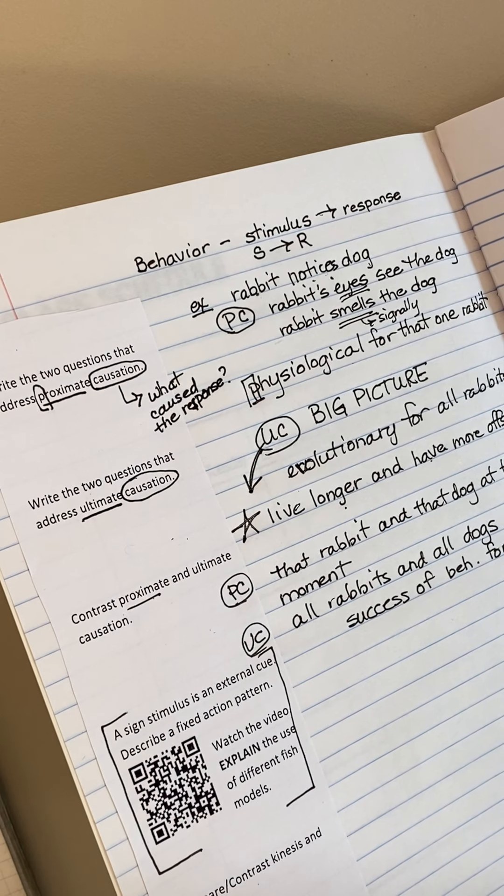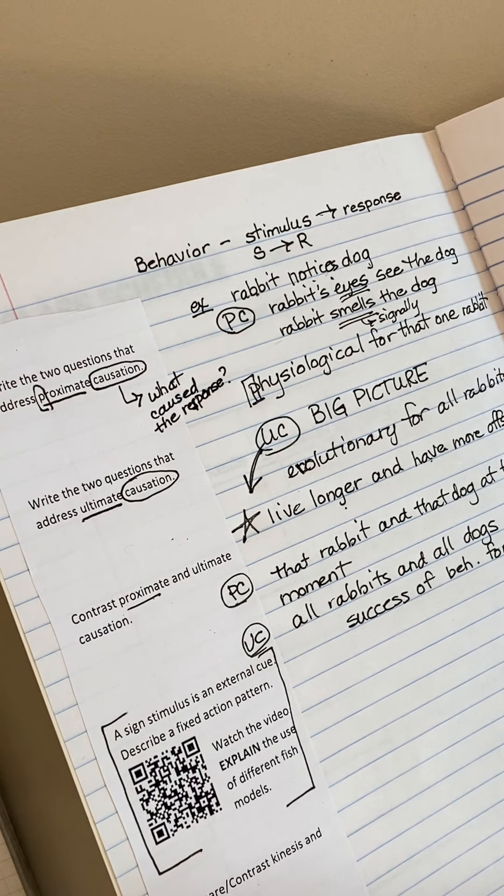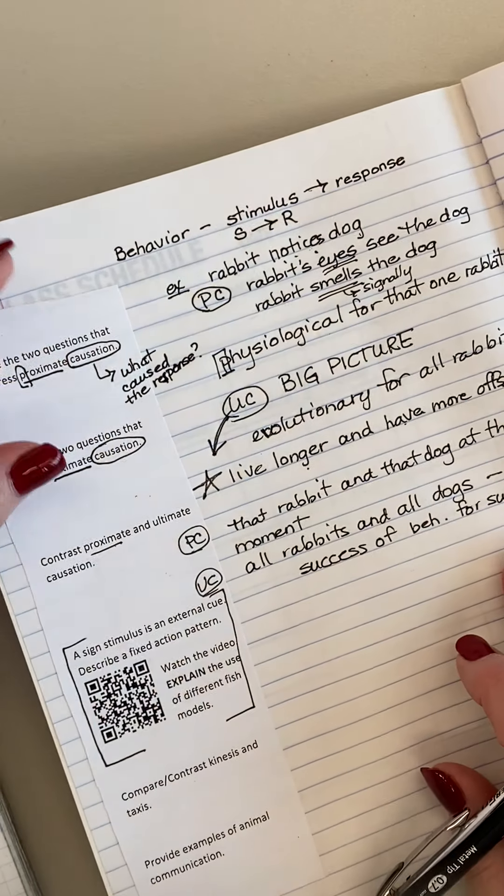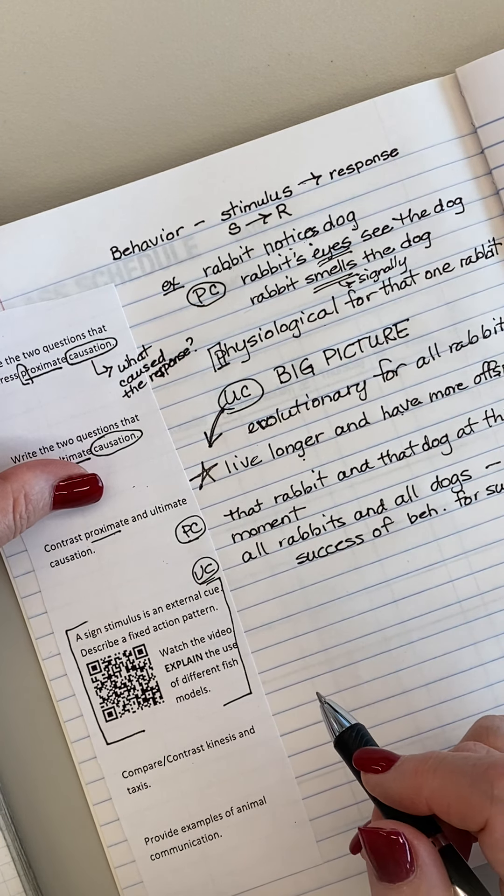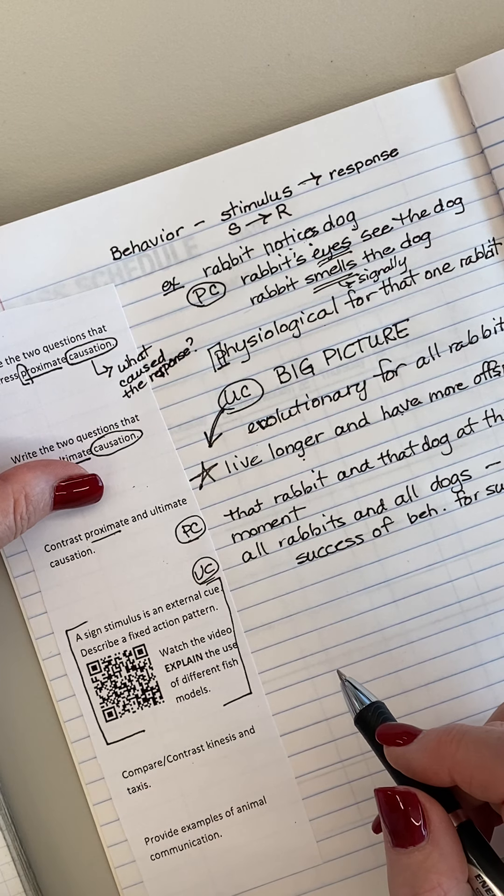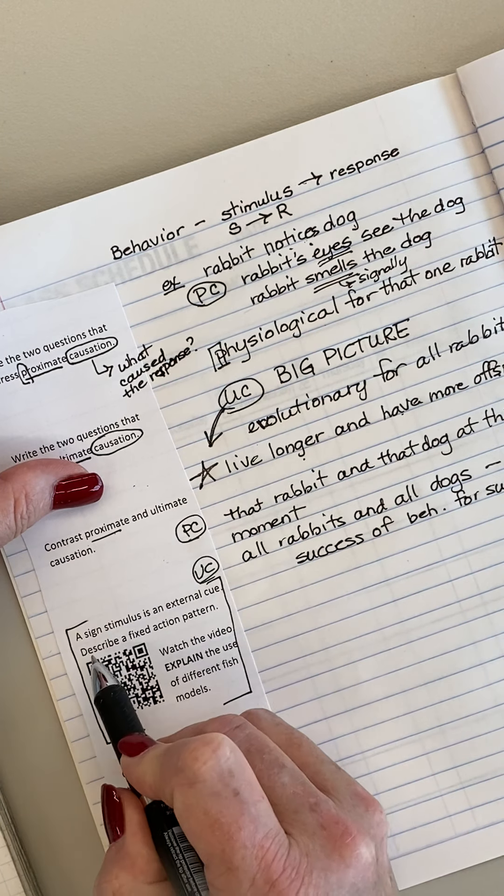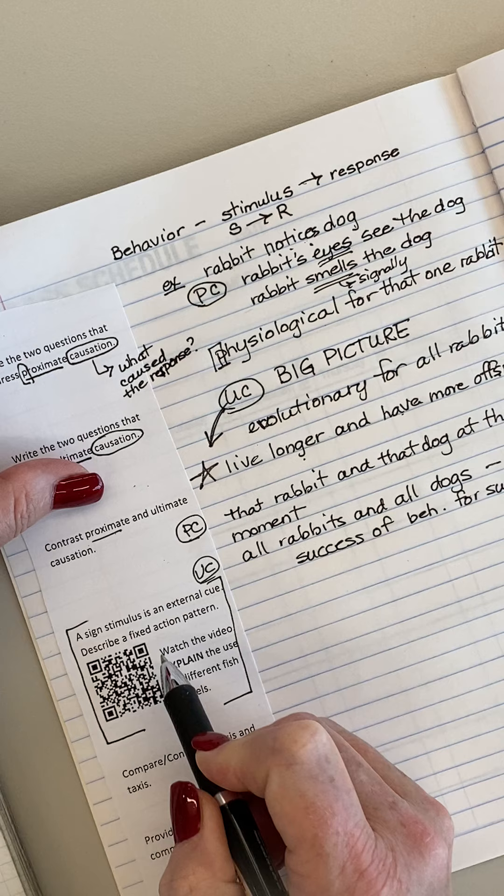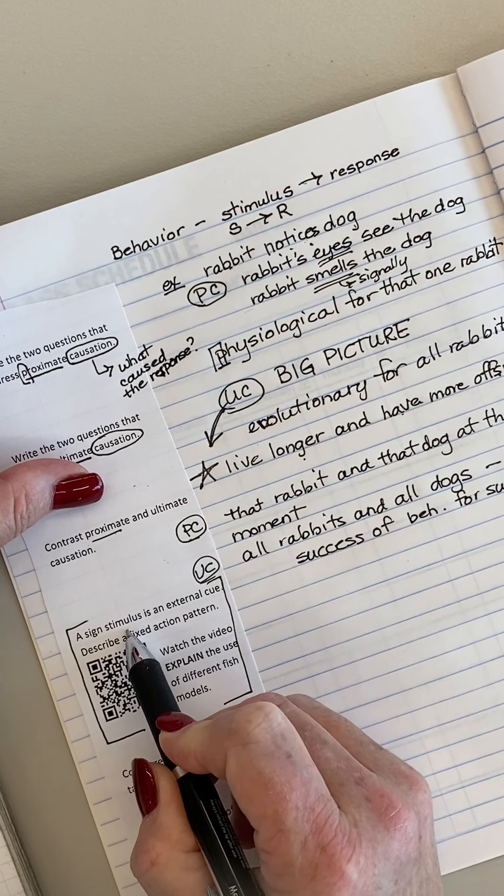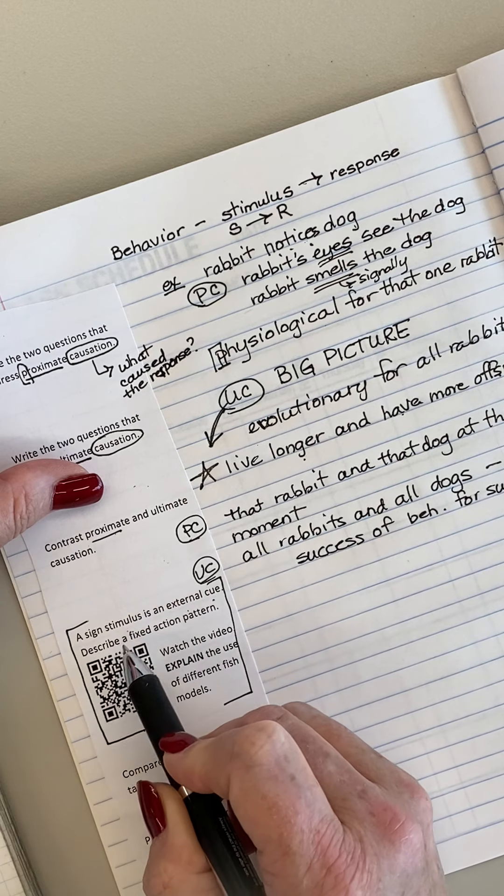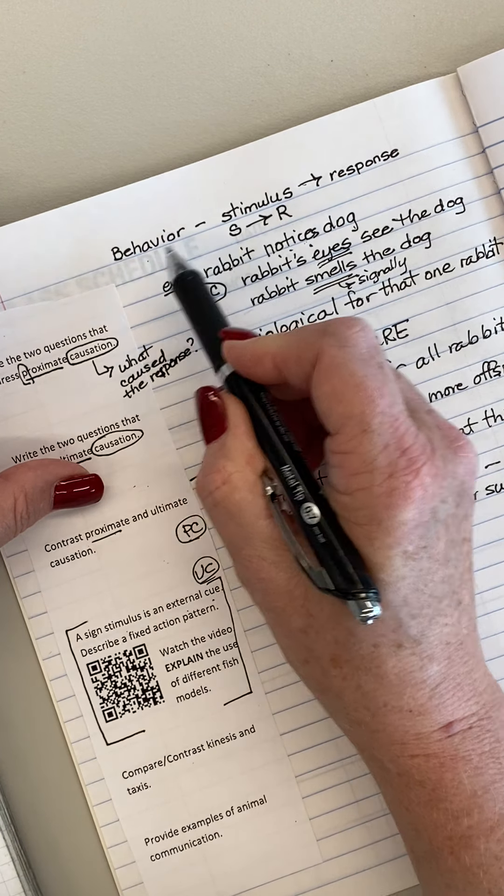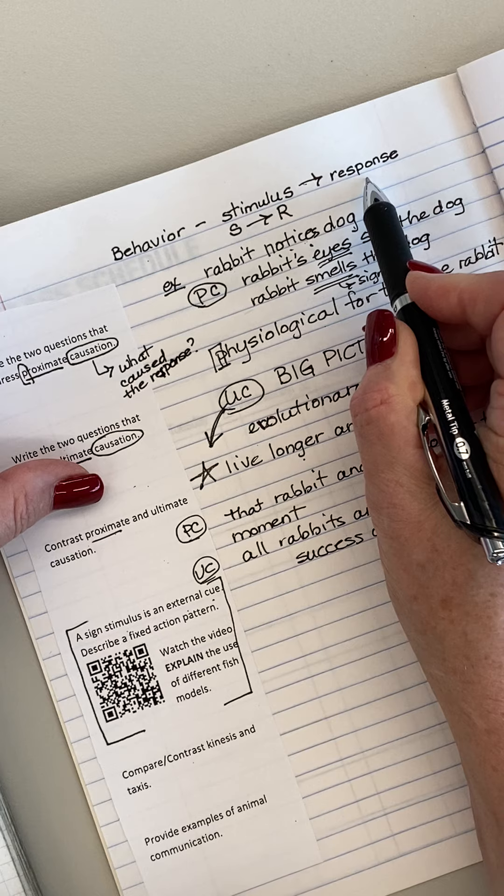Okay, so we've watched the video. Oh my gosh, I love that video. I think it's super funny that you've got these fish that can recognize another fish in their territory. So let's start off with what's written in here. A sign stimulus is an external cue. And we had said for a behavior, there's going to be a stimulus followed by a response.